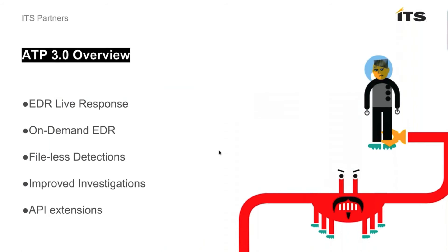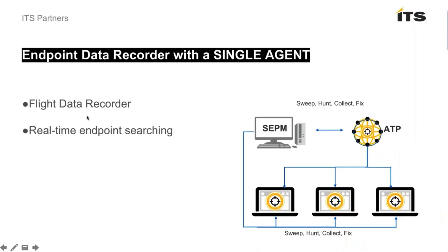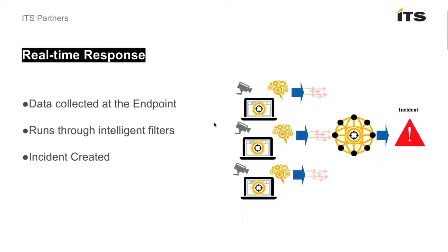Five of the new main categories in ATP 3.0 are: the new EDR library response, on-demand EDR, file list detections, improved investigations, and API extensions. We call it a flight data recorder and endpoint data recorder with a single agent — a sweep, hunt, collect, and fix process. The endpoints have traffic going back and forth; we sweep, hunt, and collect information, correlate it, and resolve or fix the affected endpoint. Real-time response data collected at the endpoint runs through intelligent filters to create and correlate incidents.